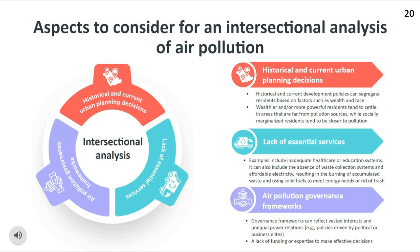Finally, it is important to look at air pollution governance frameworks. The complexity of air quality governance, with multiple institutions and actors involved, can lead to challenges in coordination and effective policy enforcement. There can also be a lack of funding or expertise to make effective decisions around air pollution. Furthermore, some policies can have vested corporate and private interests. For example, policies that give high priority to private cars but neglect the development of public transport systems can exacerbate congestion and increase vehicular emissions.